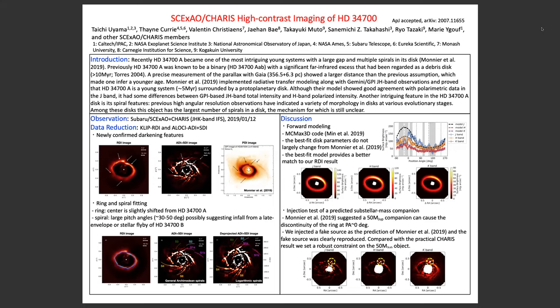Okay, thanks. Hi everyone, I'm Taichi Uyama, postdoc at Caltech. In this conference I'm presenting recent high contrast imaging of a protoplanetary disk HD 34700. We combined reference differential imaging and another combination of angular differential imaging and spectral differential imaging, and confirmed similar results to JWST by showing a large cavity at the central region and a ring feature with a discontinuity in the north direction. We also confirmed a bunch of shadows, and by comparing our results with the JWST result, we newly confirmed shadowing or darkening features as described in the manuscript.